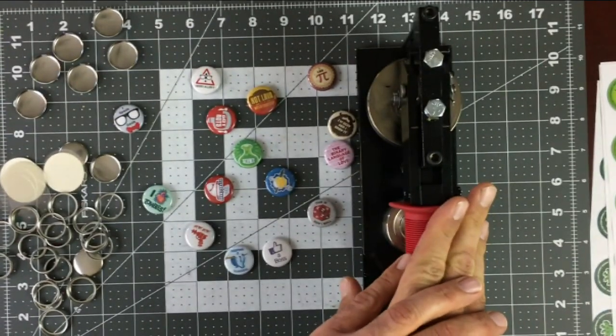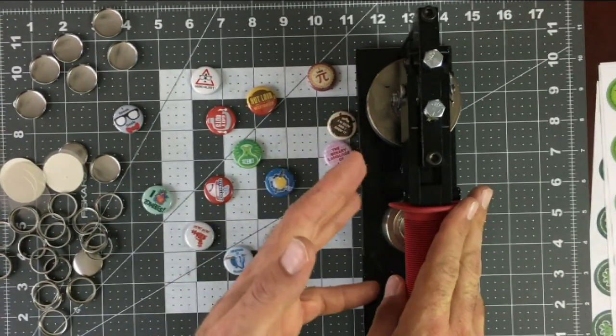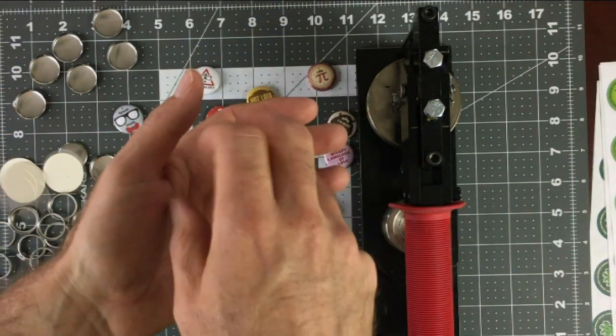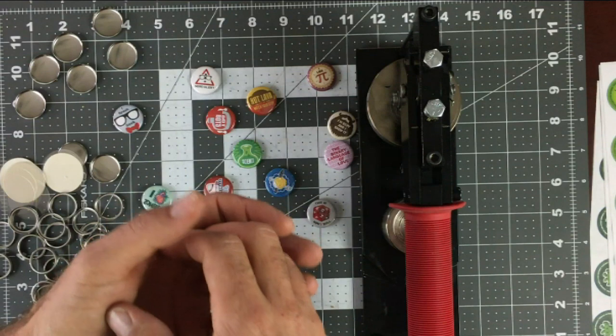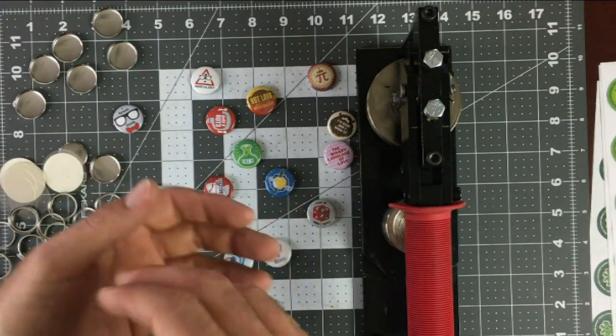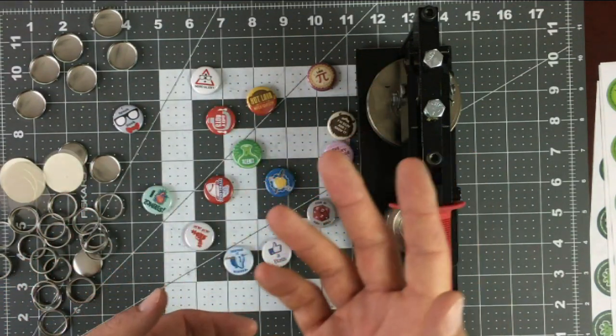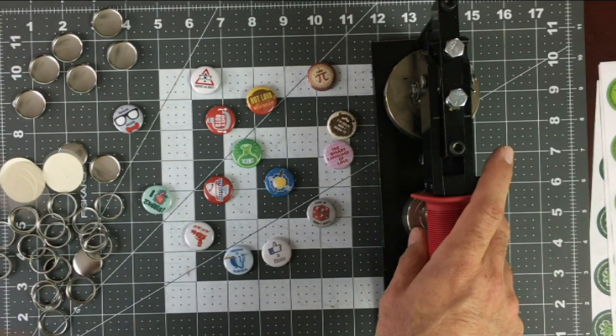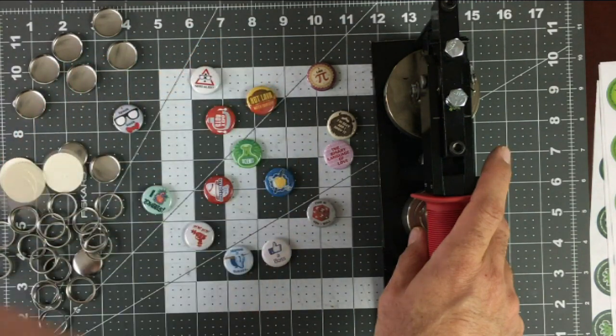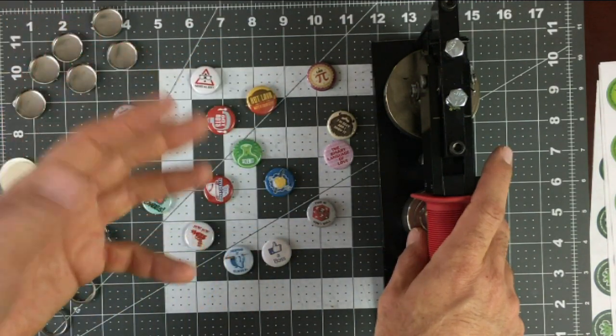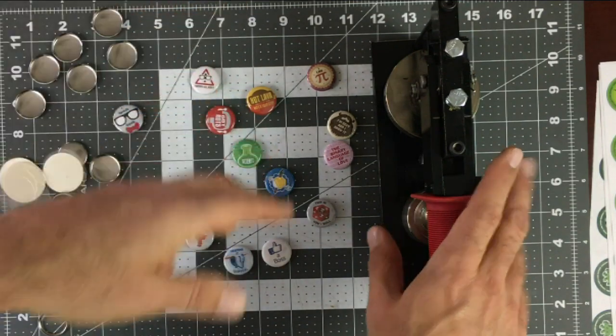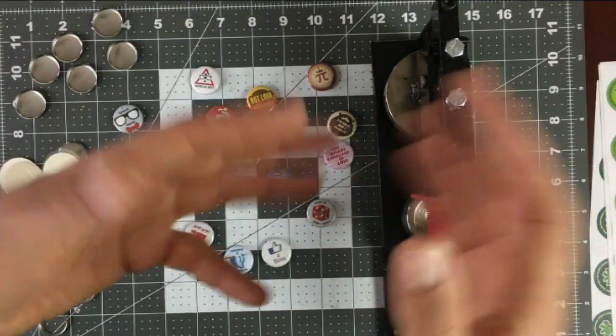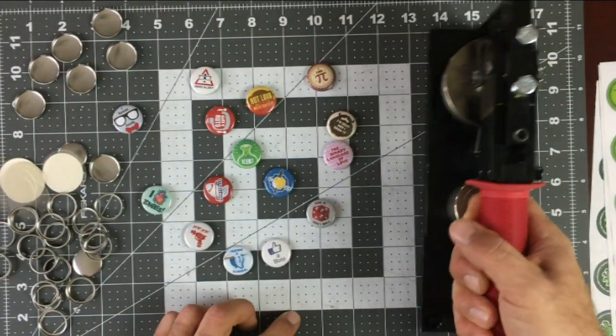Different button makers can do different sizes. So when you're looking into button makers, you need to decide what size you want. I like the one inch buttons. So this is my button maker right here. This one's a little pricey, more of a professional one. The prices range anywhere from around $30 for a small hand button making kit, all the way up to like $400 and sometimes even more.